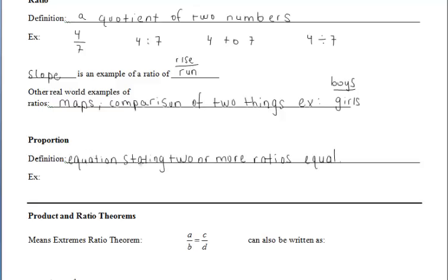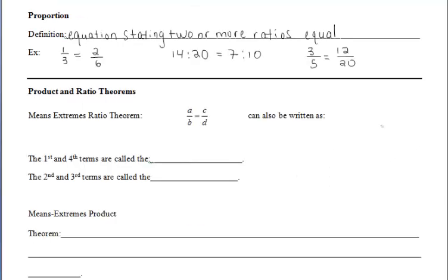Proportion directly relates to ratio, in that a proportion is an equation stating two or more ratios equal. So for example, if I were to give you the ratio 1 third, we know that 1 third is equal to 2 sixths. So that's a proportion. Let's do another example. If I gave you 14 to 20, 14 to 20 is equal to 7 to 10. And finally, 3 fifths is equivalent to 12 twentieths.